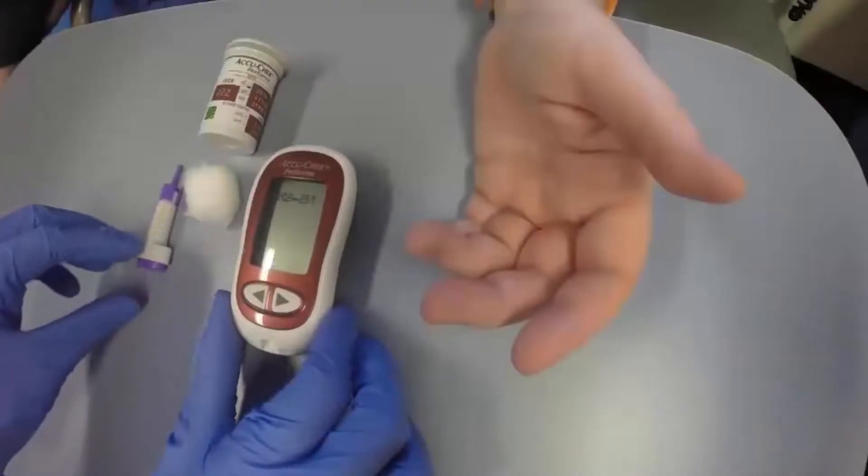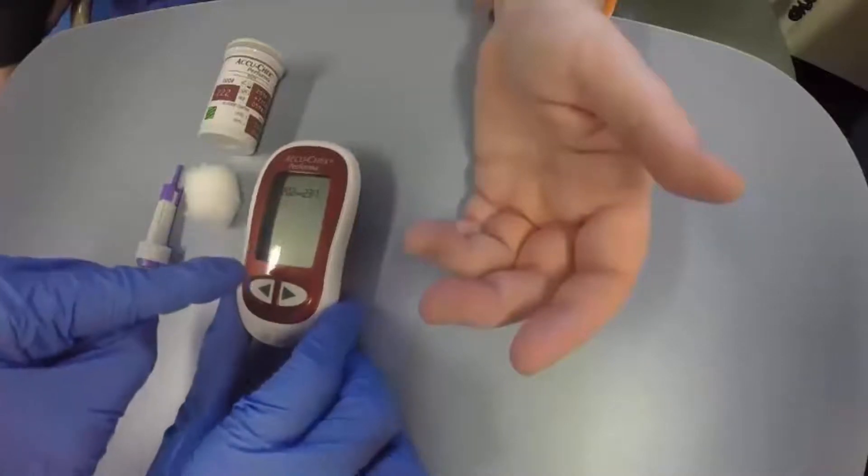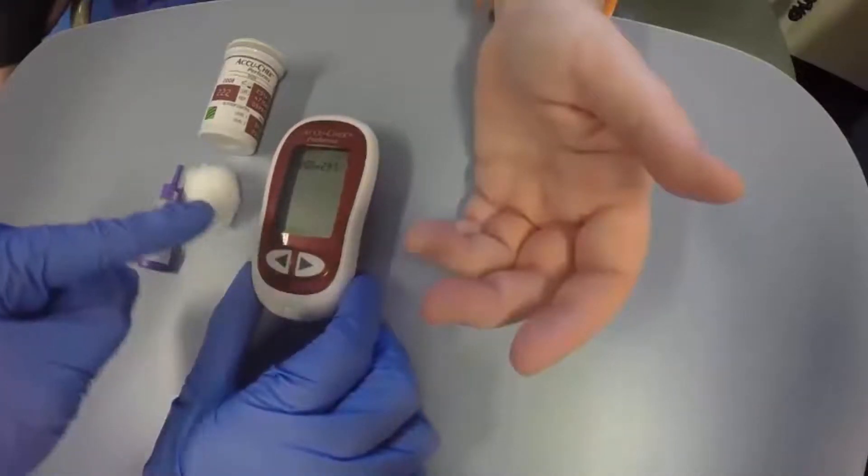When performing a blood glucose level test, ensure you have your equipment: a glucometer, regent strips, a lancet, and a cotton ball.